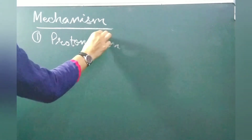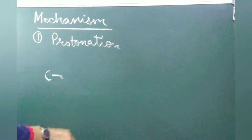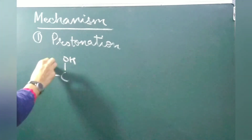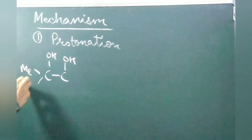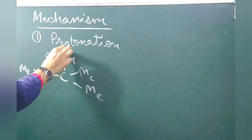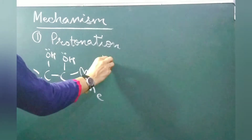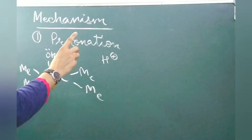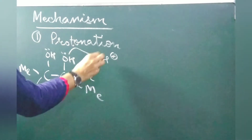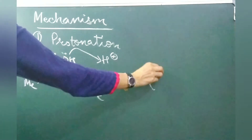Why we are saying protonation? Because we have two hydroxyl groups — protonation of one hydroxyl group occurs. Here we are having carbon-carbon with hydroxyl groups and 3-methyl and 2-methyl substituents. When we take acid, H+ is released. So there will be protonation of one hydroxyl group on the carbon-carbon framework with the 2-methyl groups.